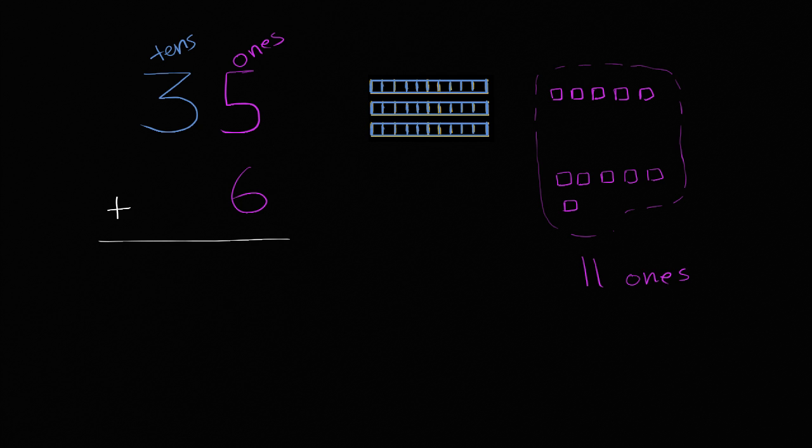And I still have three tens. So we could say it's going to be three tens, three tens, and 11 ones. Three tens, I could write plus 11 ones here. Now this is a little bit of a problem, because we can't write a two-digit number in the ones place, or in any one of the places.